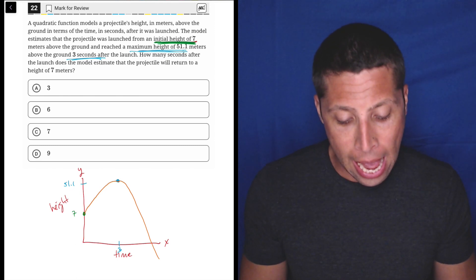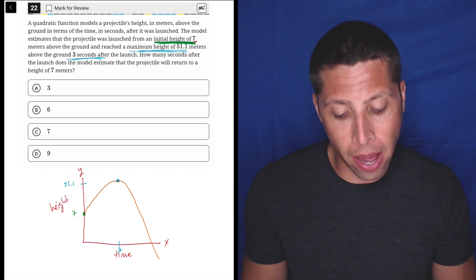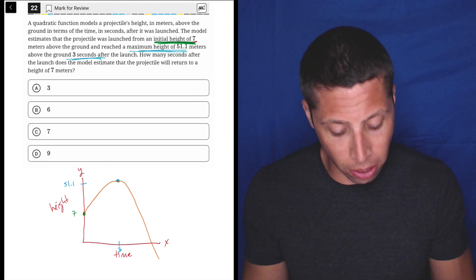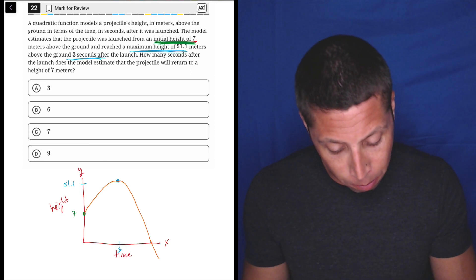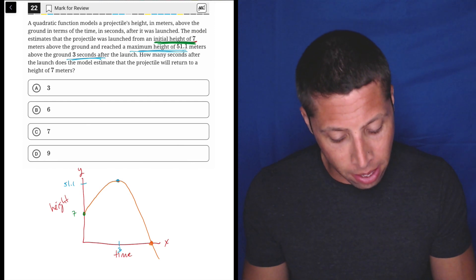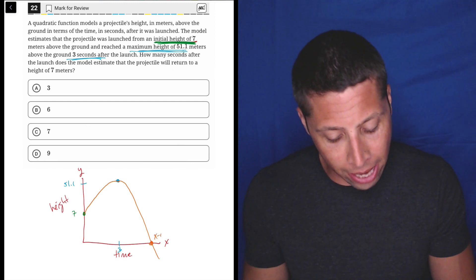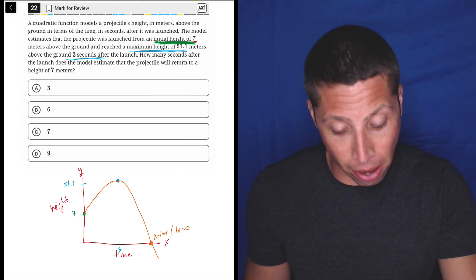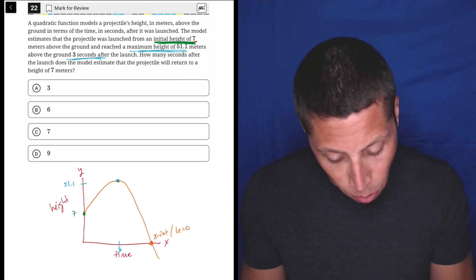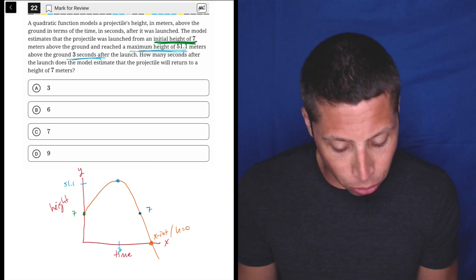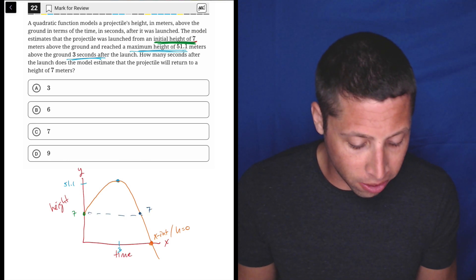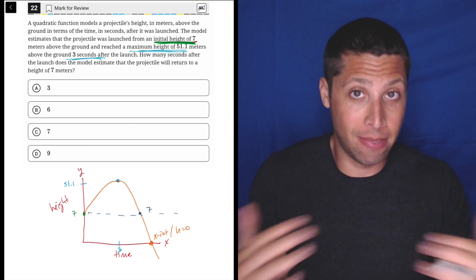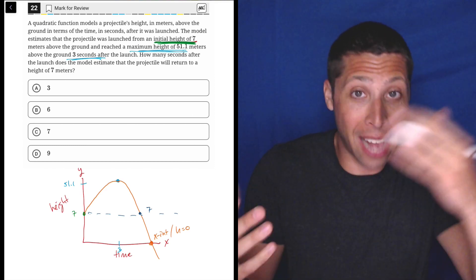Now though, what do they want from us? We've got these two points. What could they possibly want? How many seconds after the launch does the model estimate the projectile will return to a height of seven meters? So they don't care about this point down here. This is not important. This is what we would say is our x-intercept, it's a height of zero. They don't care about that. They want something else. They want another height of seven, which is gonna happen here.